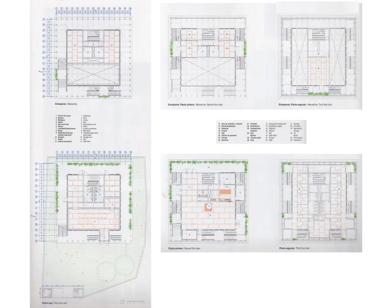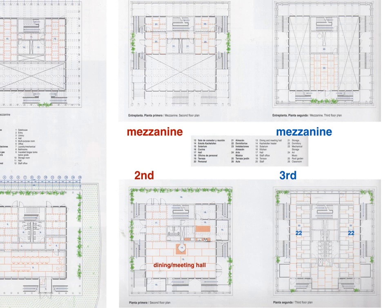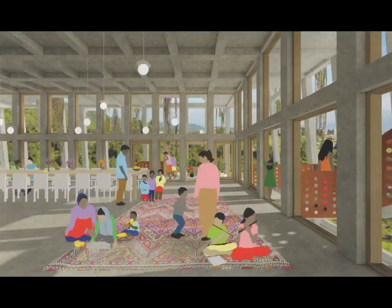Now that we know the library is a double-height space, we can understand why there is a mezzanine level plan above the first floor plan. Turning to the second floor plan, you can see a large open space corresponding to the library below; on this level the large space functions as the dining room and meeting hall, and it too is a double-height space. This constructed view shows what the dining and meeting hall would be like — there are no perimeter shelves, so the relationship to the ambulatory is more direct. Note the children running out through the openings in the framework onto the stairways and walkways of the ambulatory.